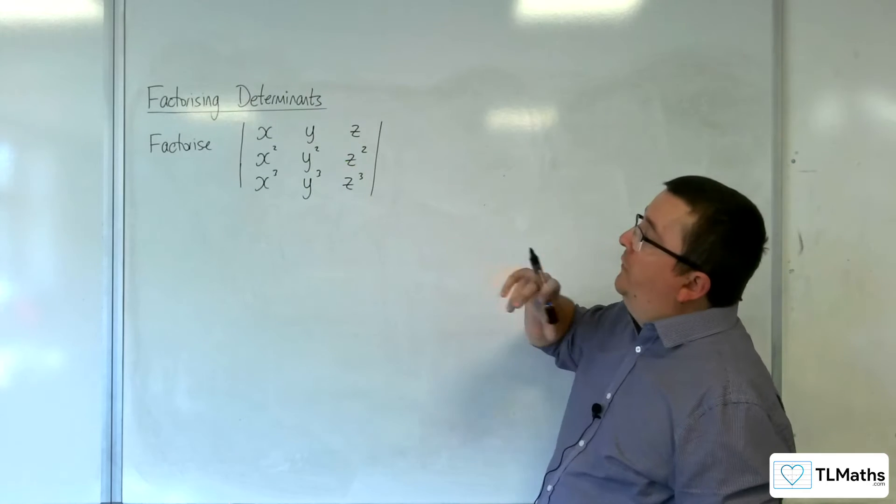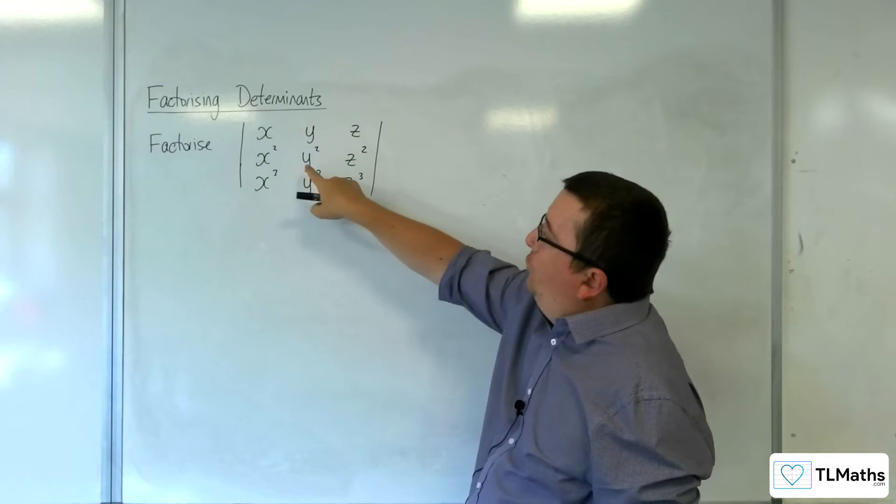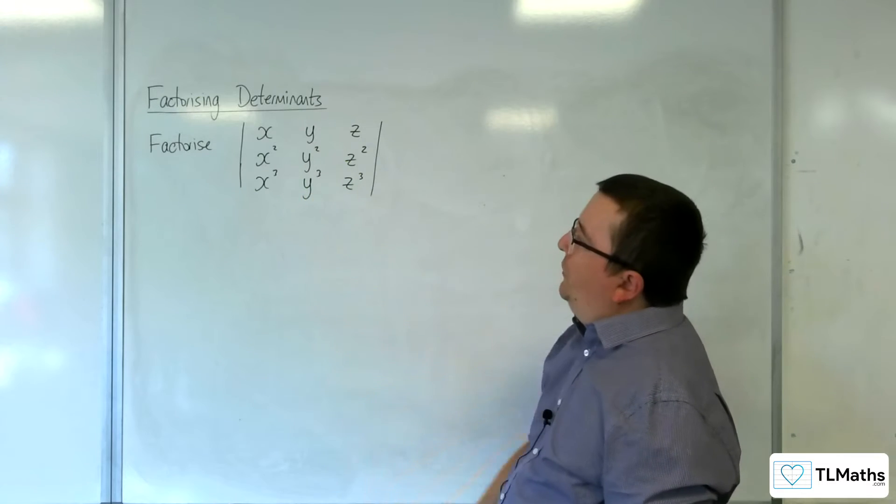In this video, we want to factorize the determinant that we have here, so the matrix x, y, z, x squared, y squared, z squared, x cubed, y cubed, z cubed.